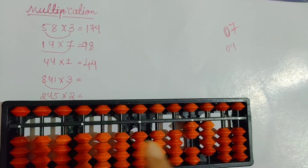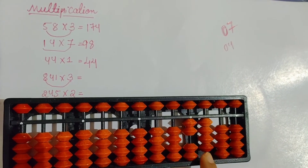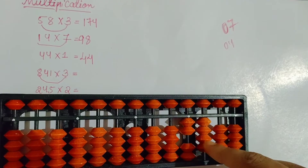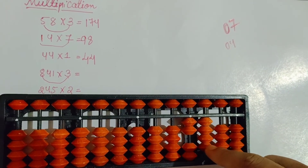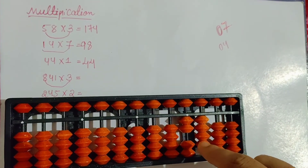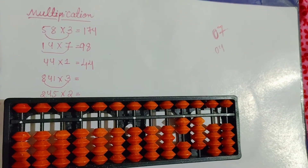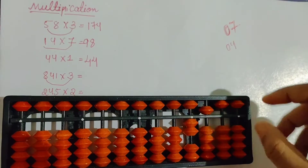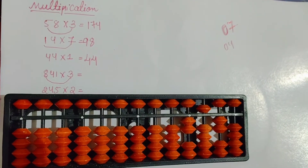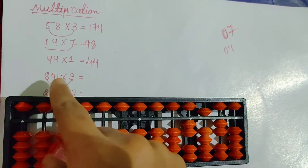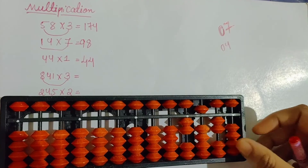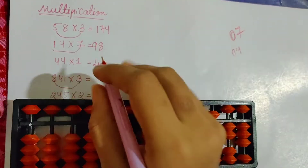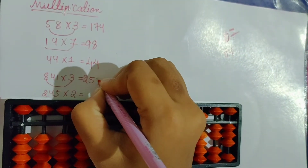Then you will multiply with the next number. Next number — first row you will skip, next number you will take from the next row. So 3 4s are 12. Here you have to take 1 and here you have to take 2. 1 is not possible — any number not possible means you have to put the formula for that number. So plus 1 formula is plus 5 minus 4. Now here you will take 2. Then you will multiply with the last number: 3 1s are 3. So the answer is 2523.